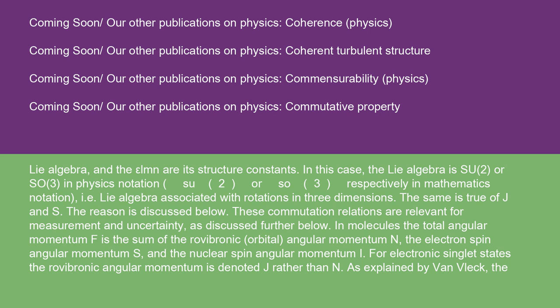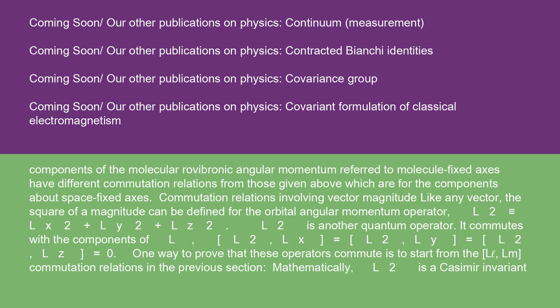In molecules, the total angular momentum F is the sum of the ro-vibronic orbital angular momentum N, the electron spin angular momentum S, and the nuclear spin angular momentum I. For electronic singlet states, the ro-vibronic angular momentum is denoted J rather than N. As explained by Van Vleck, components of the molecular ro-vibronic angular momentum referred to molecule-fixed axes have different commutation relations from those for the components about space-fixed axes.